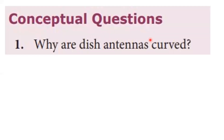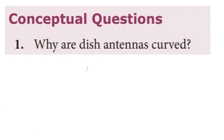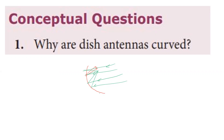First question: why are dish antennas curved? Dish antennas are curved because they have a parabolic mirror shape. A parallel beam of rays hitting the parabolic mirror shape gets focused to a single point, which is why this shape is used for antennas.